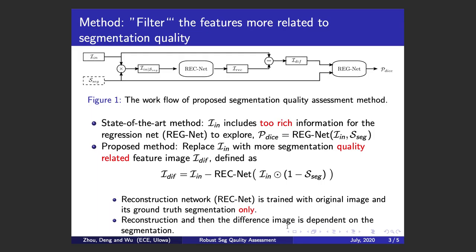The current method has a problem: the input image may include too much information for the regression network to explore. The formula is like this — the predicted Dice score equals the regression network with the input image and the segmentation as input.